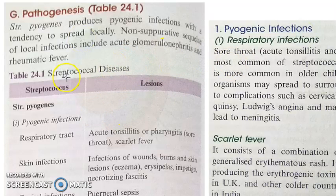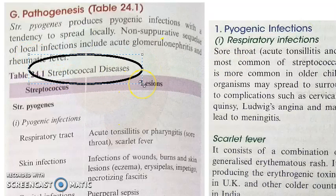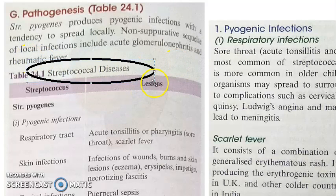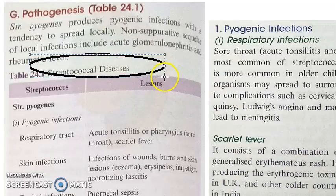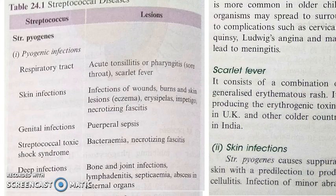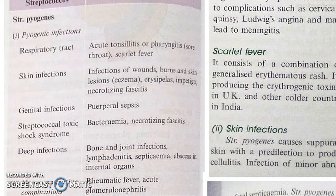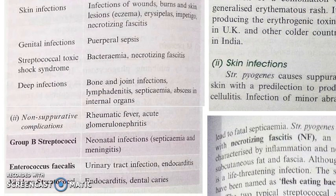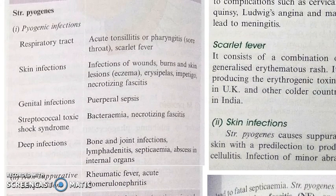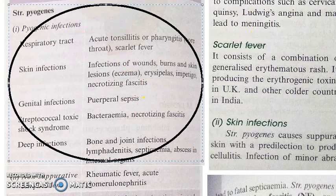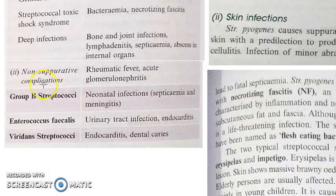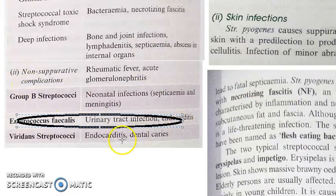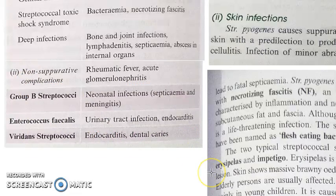The disease caused by streptococci is a very important question that has been asked 7 times. The problems caused can be suppurative or non-suppurative. Looking at streptococcal diseases overall, by Streptococcus pyogenes you have many diseases, by Group B streptococci you have others, and then there is Enterococcus faecalis and Viridans streptococci.